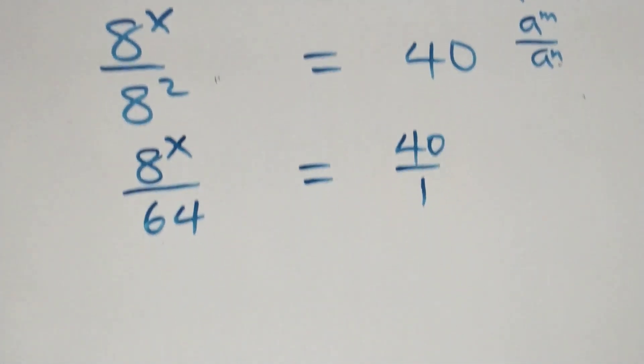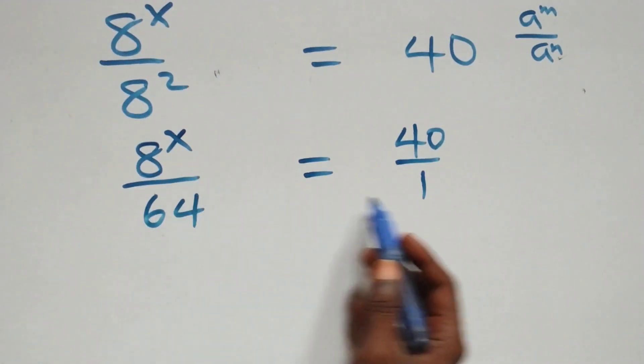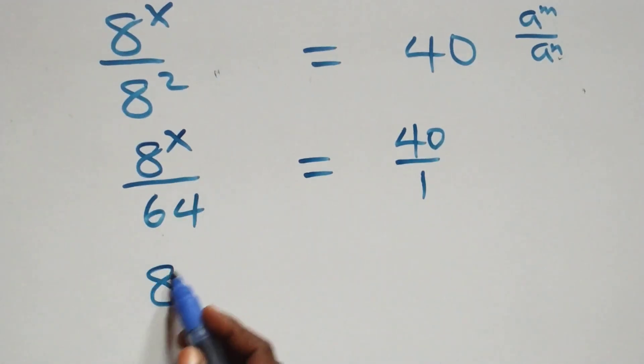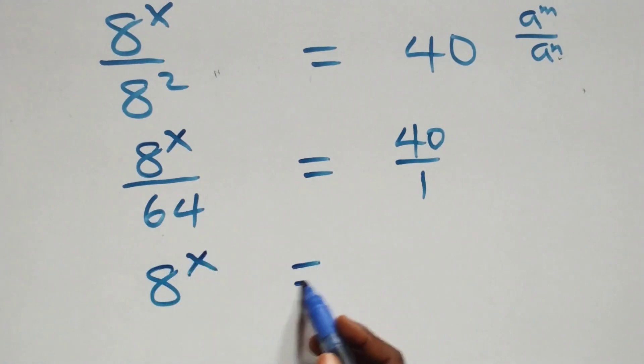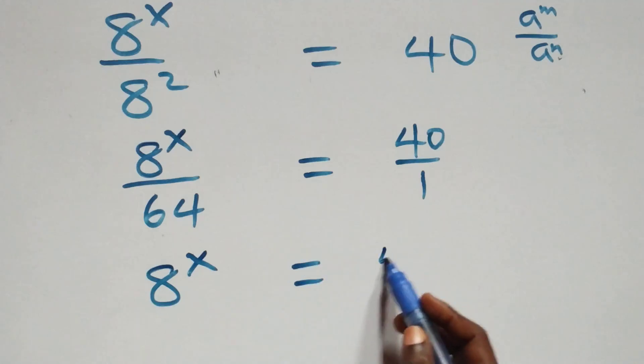The next step: we cross multiply. 8 raised to power x times 1 is the same thing as 8 raised to power x, and here we have 40 times 64.